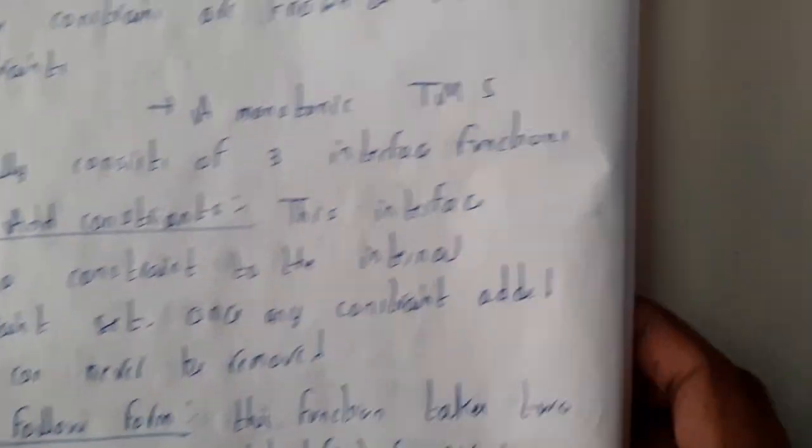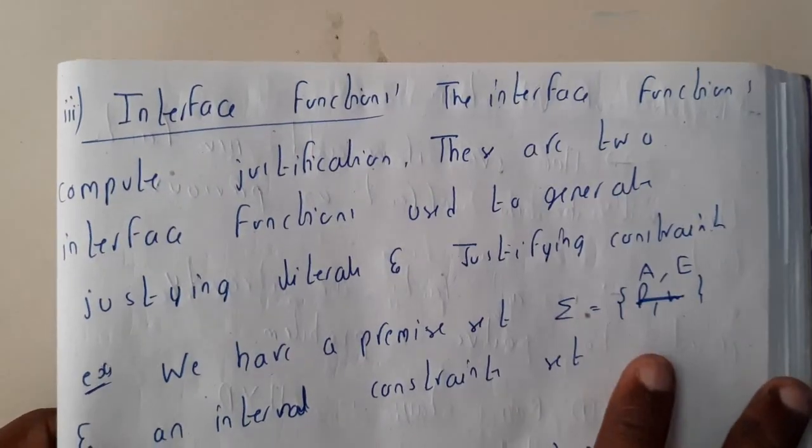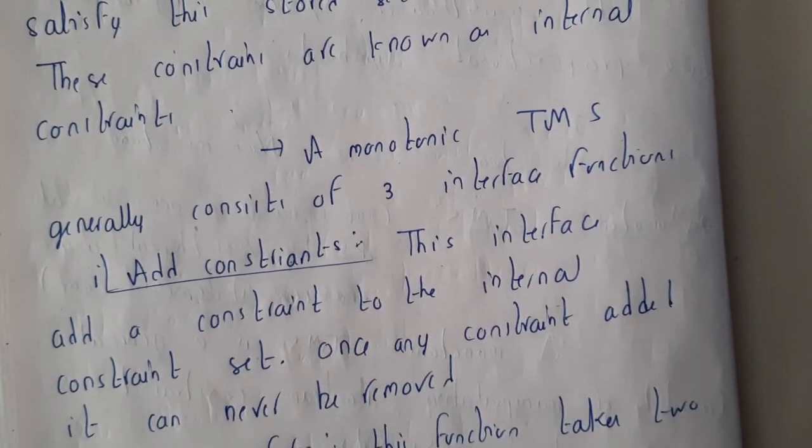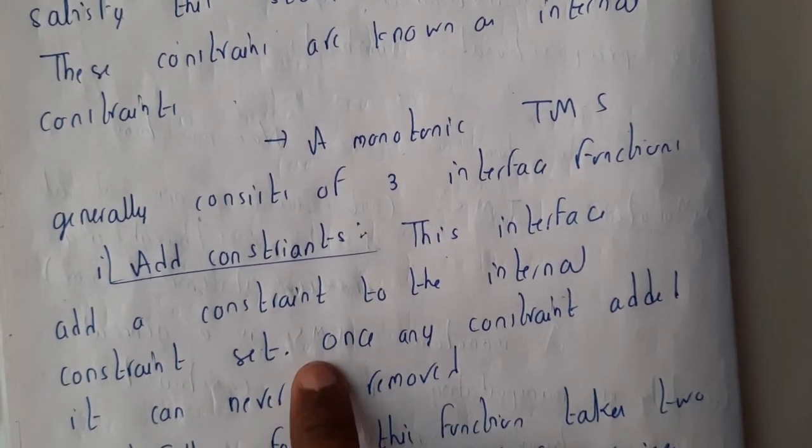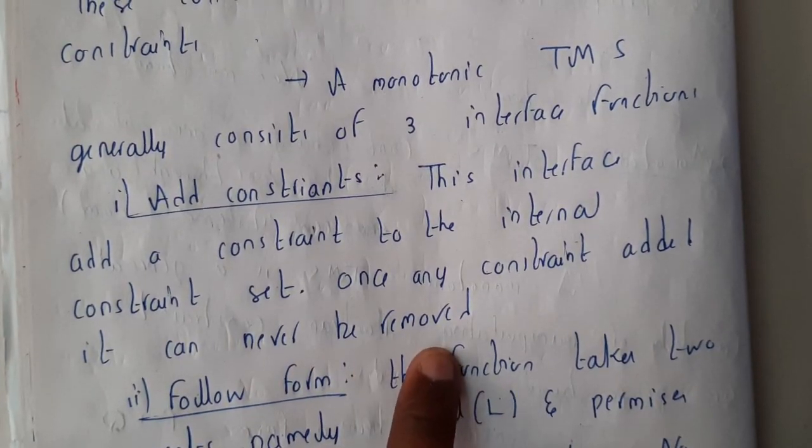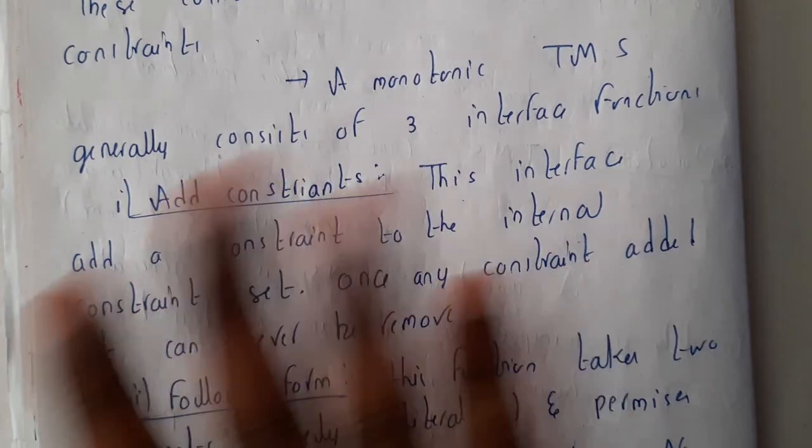Let us go through adding constants. This interface adds the constraints to the internal constraint set. Once any constraint is added it can never be removed. So the thing is that if you add a new thing you can never remove it because it's fixed there, that's it.